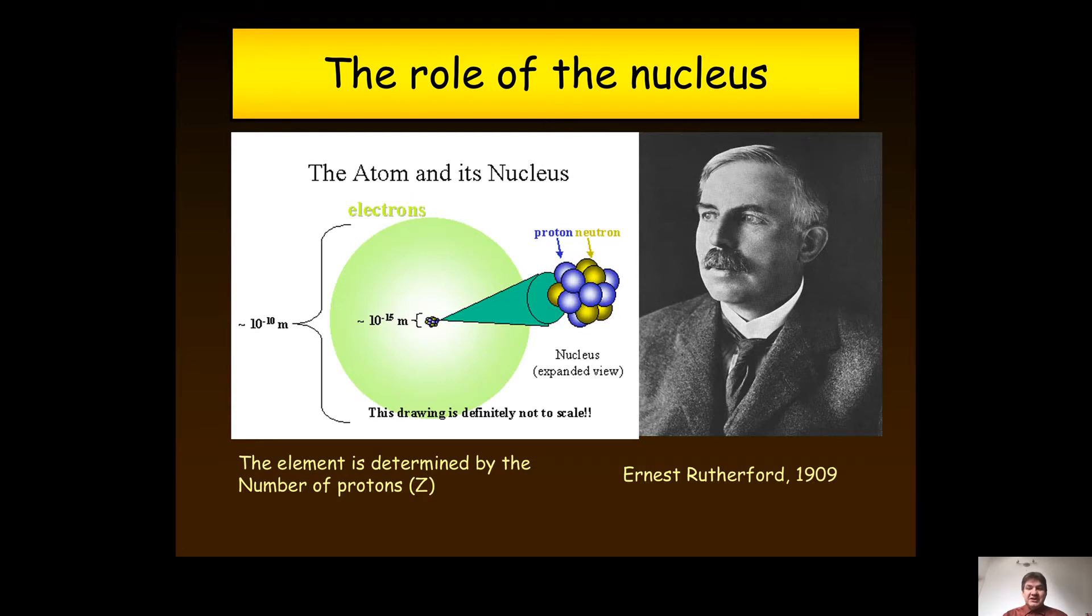By comparison, the nucleus is 15 orders of magnitude smaller than the atom, yet it's very important. It is the number of protons in the nucleus that determines the chemical element it belongs to. So if you have an element with, say, 92 protons, uranium,